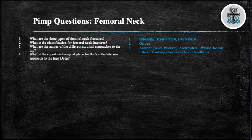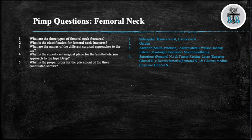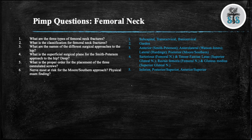Question 4: What is the superficial surgical dissection for the Smith-Peterson approach to the hip, and what is the deep surgical plane? The superficial approach is between the sartorius and the tensor fasciae latae; the deep surgical approach is between the rectus femoris and the gluteus medius. Question 5: What is the proper order for placement of the three cannulated screws? Inferior, posterior superior, and anterior superior — remember Indian Pale Ale or IPA. Question 6: Which nerve is most at risk during the Southern approach and what is the physical exam finding if this nerve is injured? The sciatic nerve, and on physical exam this corresponds with foot drop.